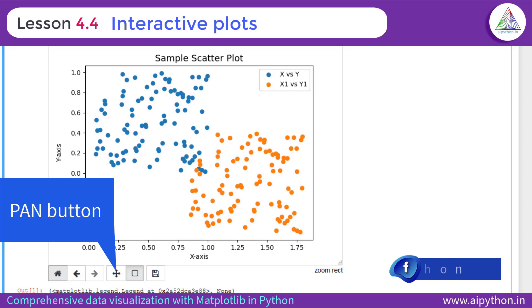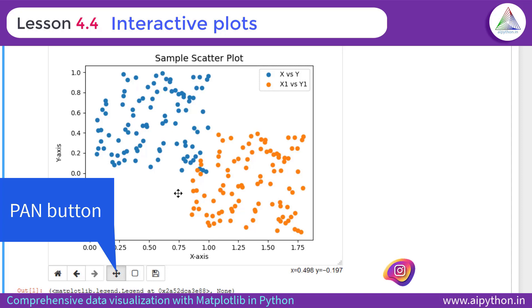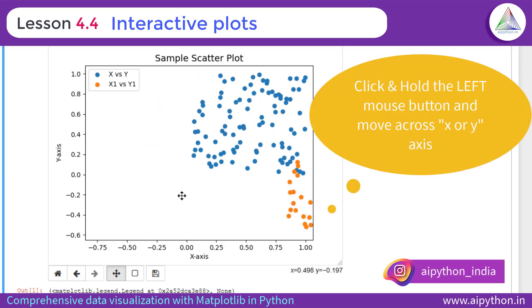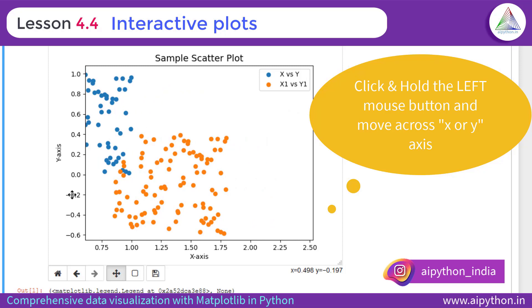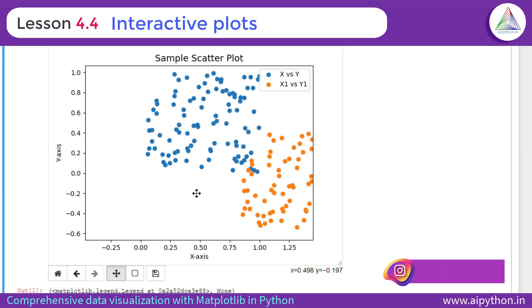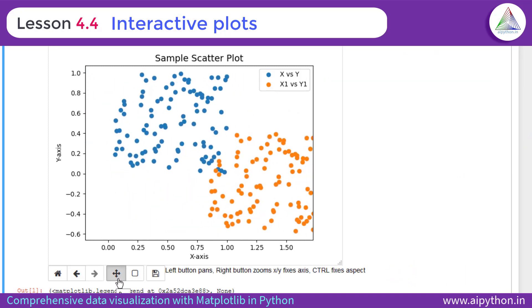Additionally you also see a pan button. So what it does, it basically allows you to pan the portion like you can pan across X axis, you can pan across Y axis just by holding the mouse button, left button. As the description of this button says, left button pans.